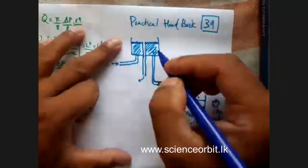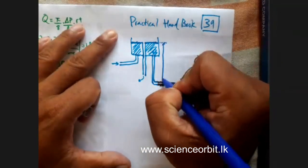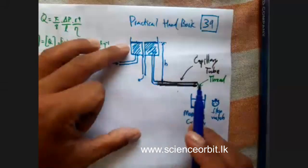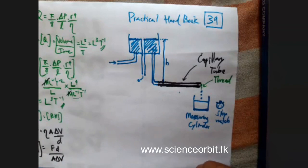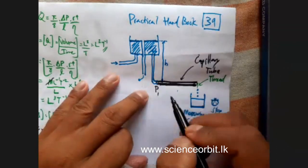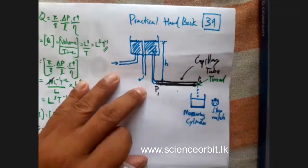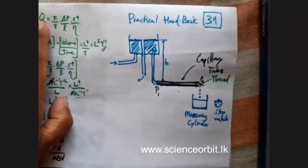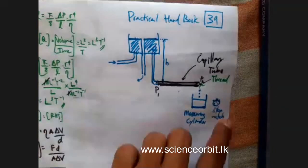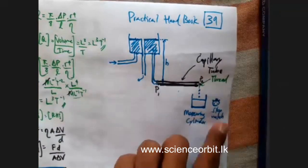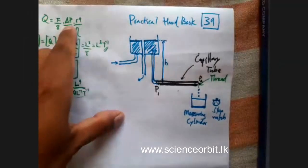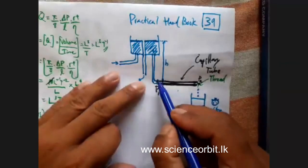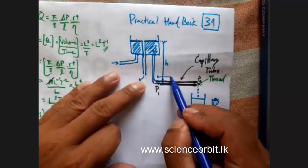We are using a measuring cylinder, and we will have to measure this height H. Inside the capillary tube it will be very small even though drawn larger. We also need to measure the pressure at two points P1 and P2. For Q, we measure the volume and the time, then divide volume by time to get Q. You can find the length of the capillary tube using a meter ruler.